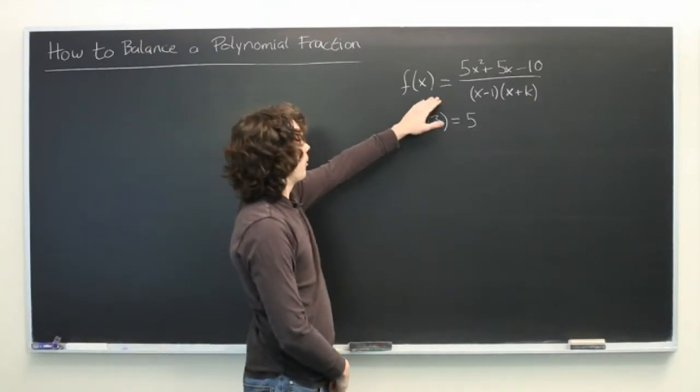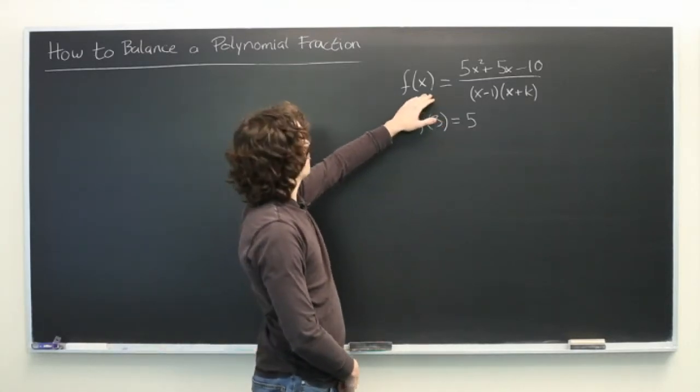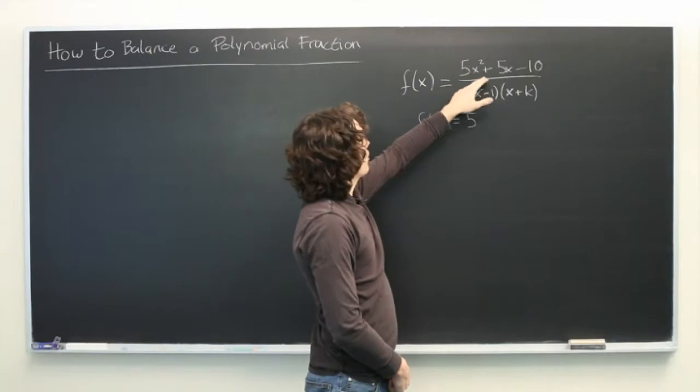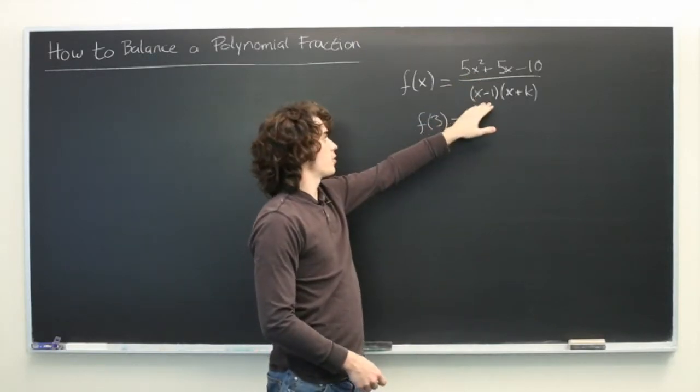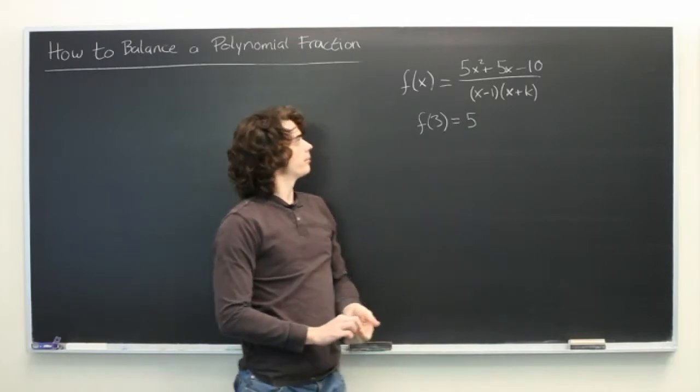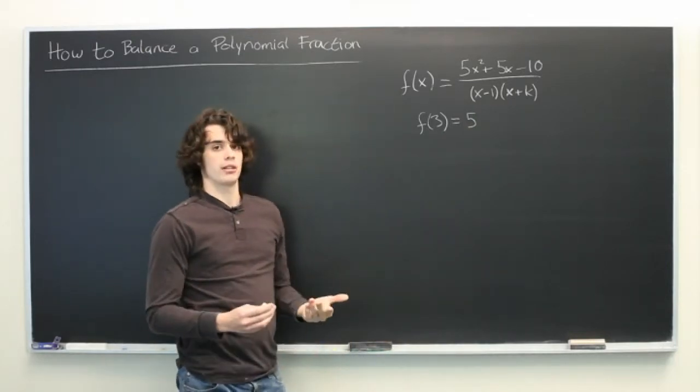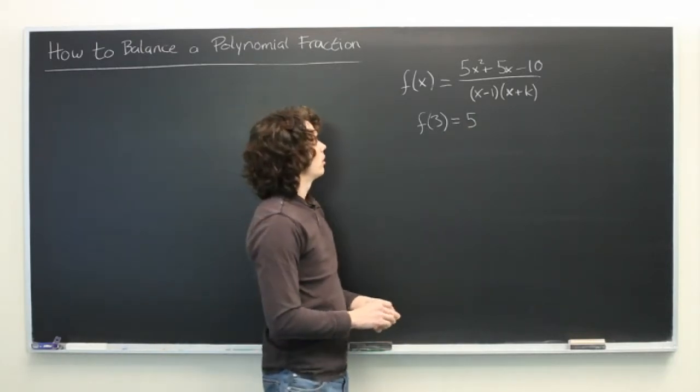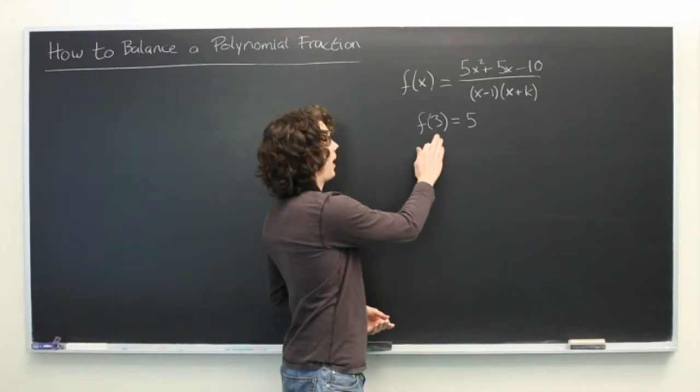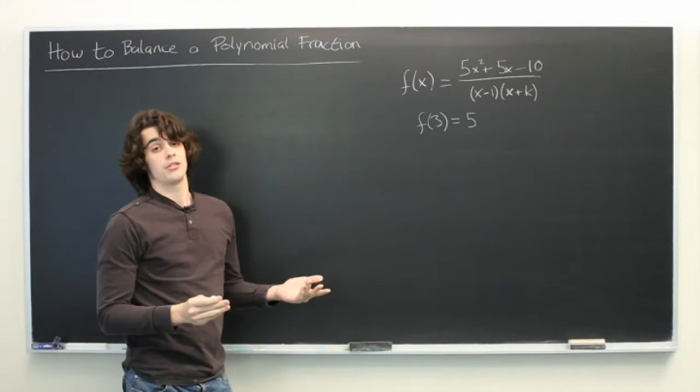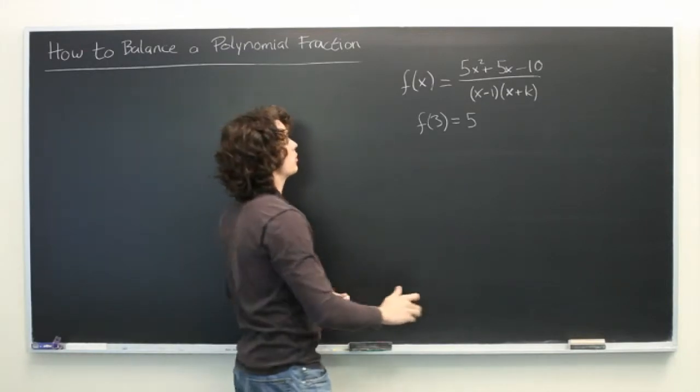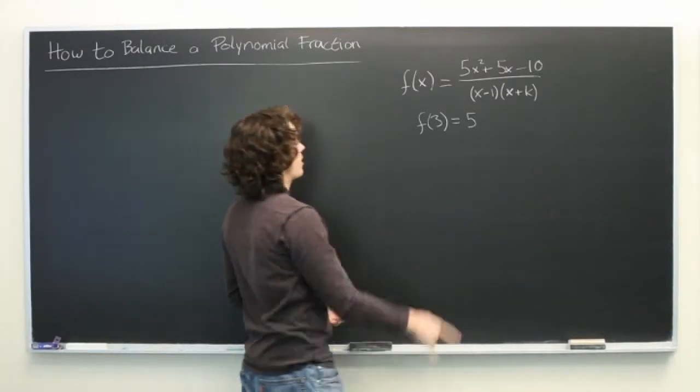So here we have a polynomial given by f(x) equals 5x squared plus 5x minus 10 over (x minus 1) times (x plus k), where we want to find the value of k. We're also told that f(3) is equal to 5. Believe it or not, this is enough information to unambiguously determine the value of k that makes both of these true.